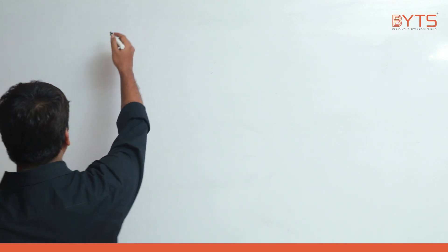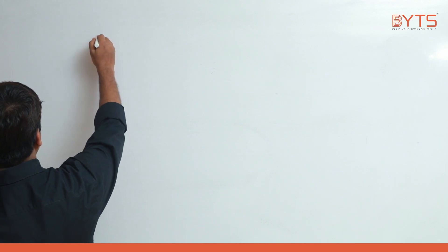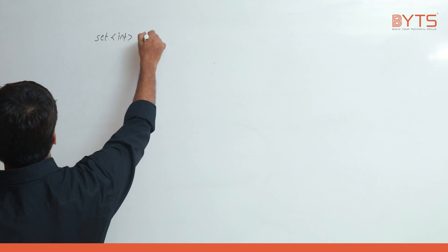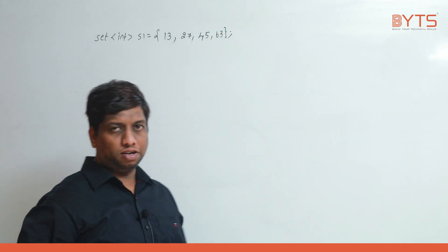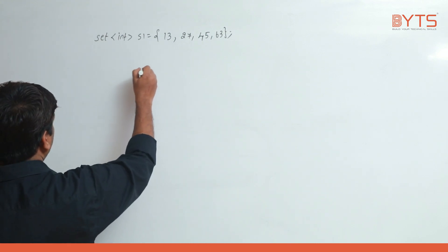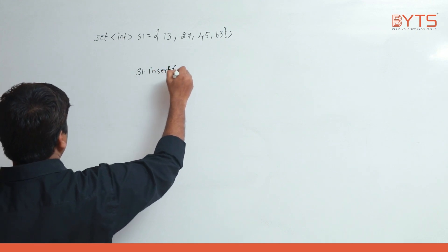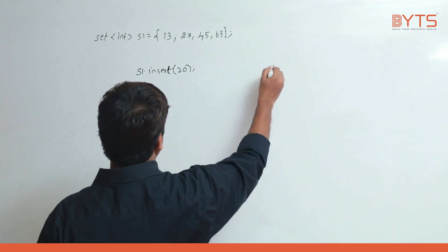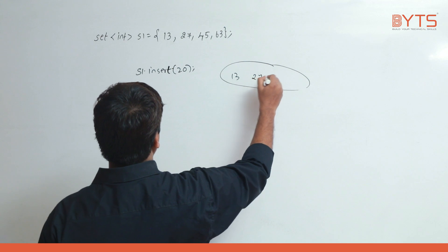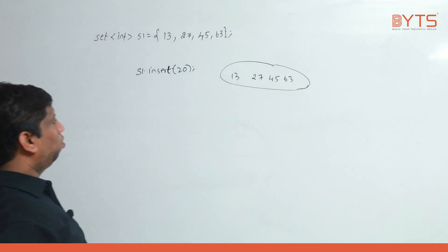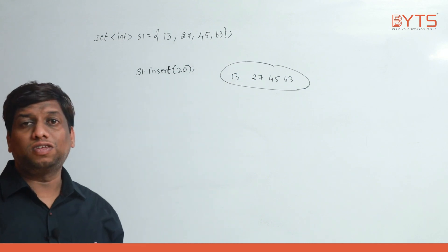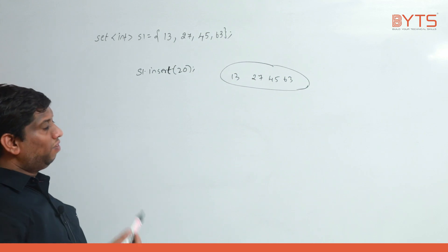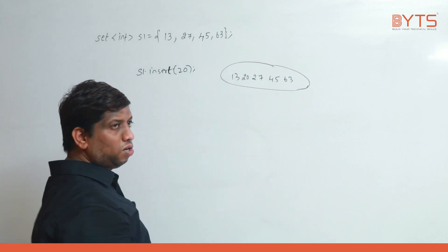Now we will see the insert function. Create set<int> s1 = {13, 27, 45, 63}, then s1.insert(20). Since 20 is not available, it will insert 20. But if you call insert again for 20, we don't know whether it was inserted or not. So insert returns a pair: the first is an iterator to the element, and the second is true for success, false for failure — false meaning 20 is already available.